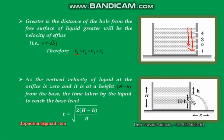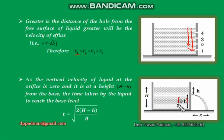When this fluid flows out, it initially moves in the horizontal direction and then comes down. That means the initial vertical component of velocity is zero — like a free-fall condition. Therefore, to calculate the time taken by this fluid to reach the base level, we use the free-fall formula: t equals root of 2(H minus h) divided by g, where (H minus h) is the vertical distance from the orifice to the base.